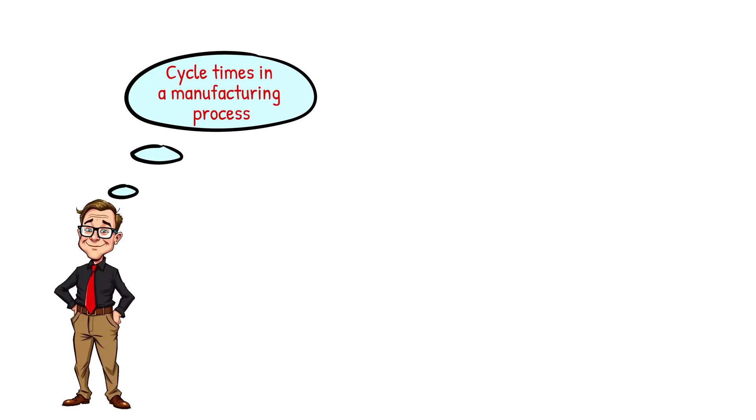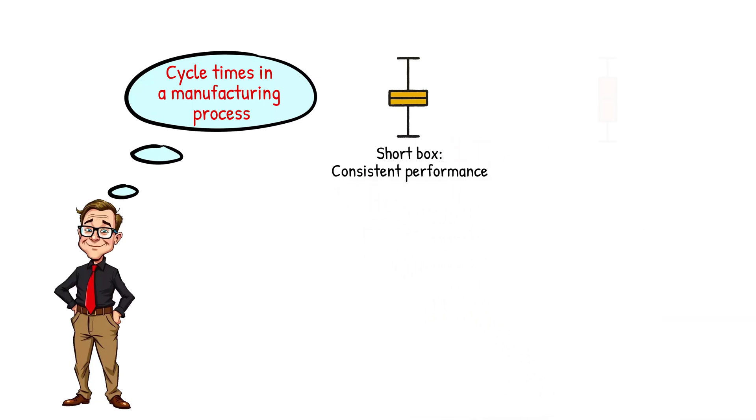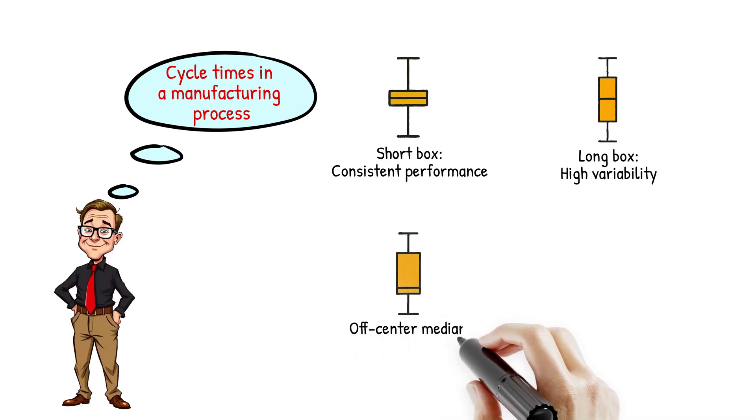Imagine you're analyzing cycle times in a manufacturing process. A short box indicates consistent performance. A long box suggests variability that needs investigation. If the median isn't centered, your data is skewed, indicating potential issues. Outliers might show specific areas requiring immediate attention.